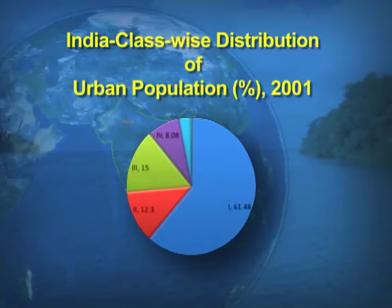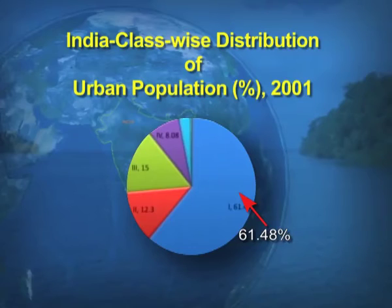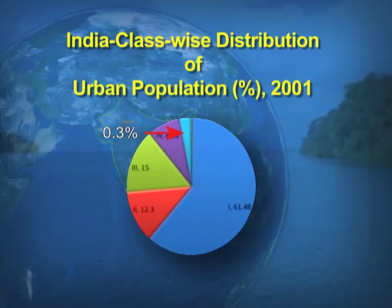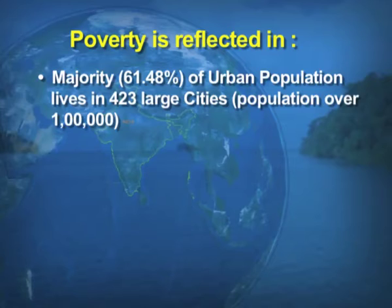This is a statistical representation of the distribution of urban population. It shows that class one cities have the maximum percentage of the urban population — that is 61 percent. And class six cities have only 0.3 percent of the urban population, with a population of only 5,000. For class one cities, where the population is always more than 1 lakh, the percentage is 61 percent, and they are represented by 423 large cities of the country.